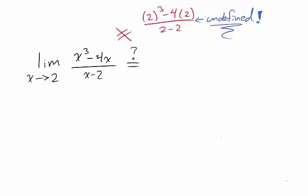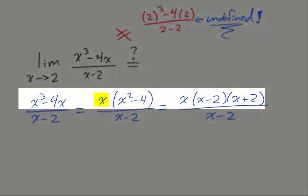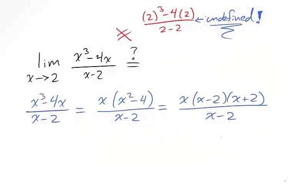First notice that this function is not simplified. We can factor the numerator by first pulling out an x, then factoring a difference of squares. And then we can cancel x minus 2 from the top and the bottom. And we are left with the polynomial x times x plus 2.